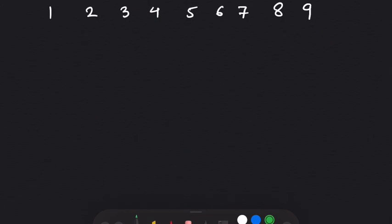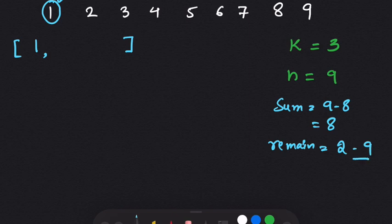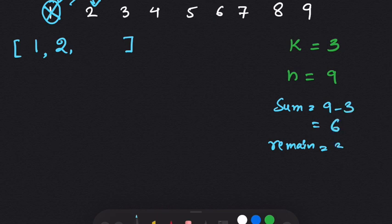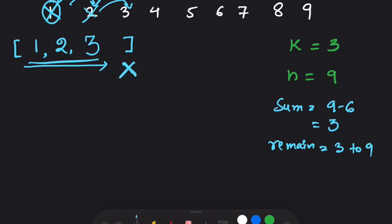Now let's take example 2 where k is 3 and n is 9. We start with an empty array and add 1 first. The remaining sum is 8 and the numbers remaining are 2 to 9. We add 2, and the sum becomes 3 so we need 6 more. We then add 3, and the remaining sum is 3, but we've used all our space — this is not correct.